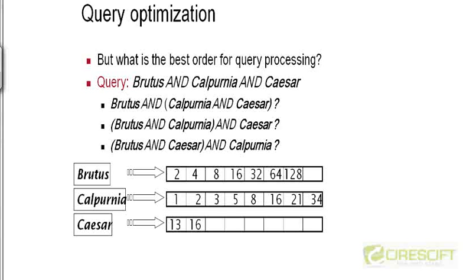But in this example, there is more than one way to go about answering this query. For example, we could take the Calpurnia postings list, intersect it with the Caesar postings list, take the result of intersecting these two postings lists, and intersect it with the Brutus postings list. So we could evaluate Calpurnia AND Caesar first, and then AND the result with Brutus.